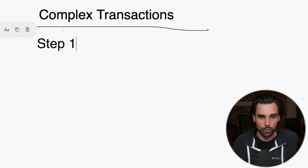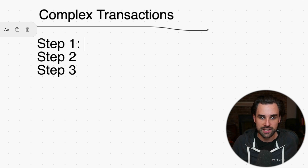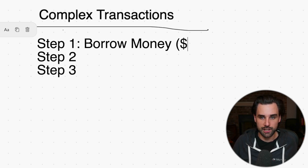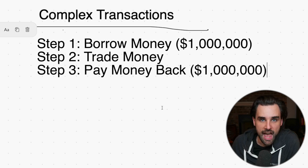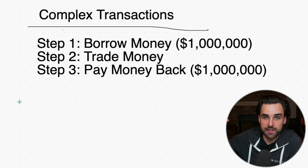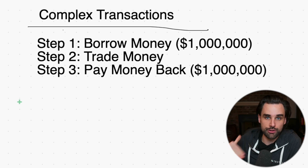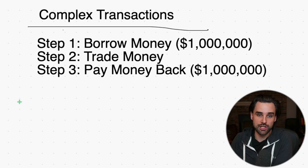So like step one, step two, step three. For example, step one could be borrow money — a million dollars. Step two could be trade money. And step three could be pay the money back. All these things happen one, two, three inside the same blockchain transaction. As a coder, you're writing the code that performs each of these actions in sequence — taking money out with a flash loan, doing something with it, and then paying it back.